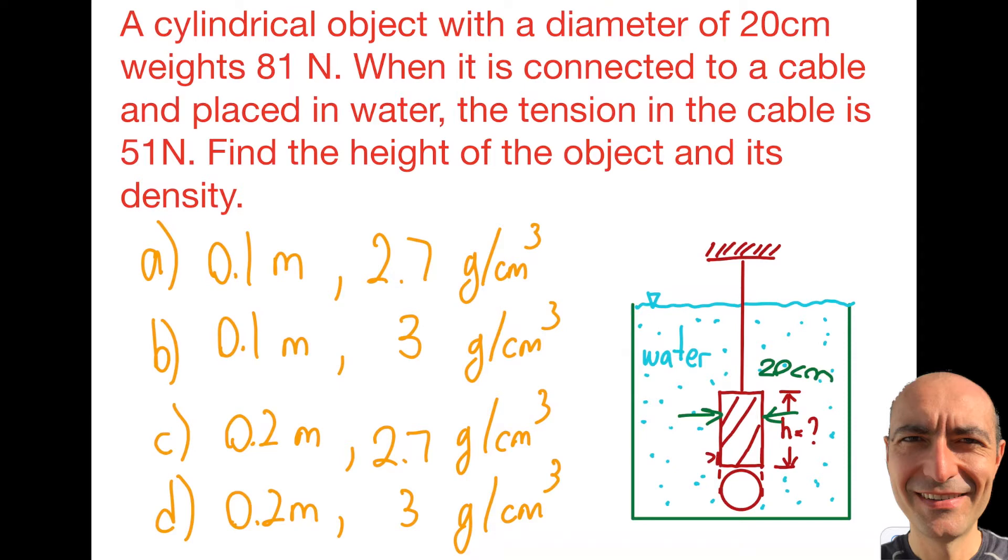And then what I do is I connect it to a cable and place in water. And when I measure, I see the tension in the cable is 51 newtons. The question is asking you from two ends. The reason is I want you to practice for it. The first one is volume related, so the height is being asked. The second one is related to the density of this particular object. This is a solid object.